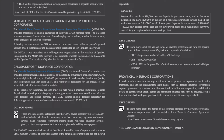Here's an example. Assume that you have $80,000 cash on deposit in your own name, and in the same institution, you have $120,000 on deposit in a registered retirement savings plan. If the institution were to fail, CDIC would insure your deposits in the amount of $180,000 — the $80,000 covered for the cash deposit in your own name, and a maximum of $100,000 for your registered retirement savings plan. In this scenario, you would lose $20,000.